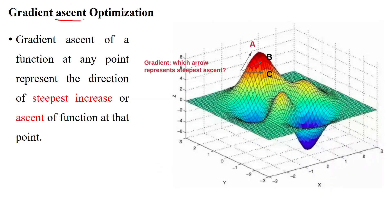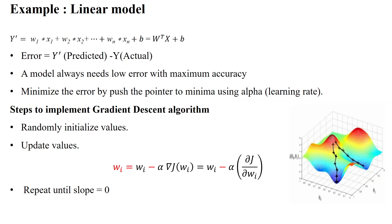Another optimization for maximization is gradient ascent, which shows the steepest increase of a function at any point. The error can move in different directions, but gradient ascent selects the steepest direction upward. The rate of change towards the steepest direction is called gradient ascent. We will use a linear model as an example.